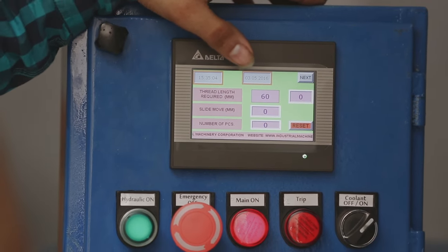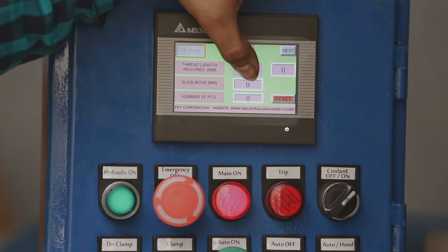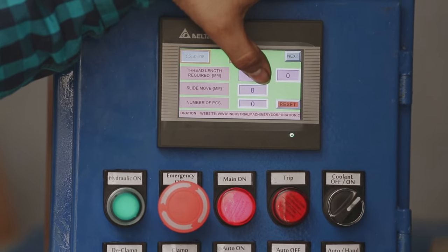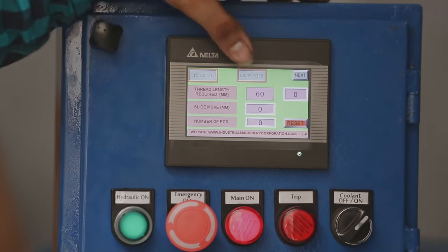Slide move shows the current position of the machine from the home point, number of pieces.